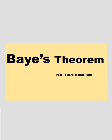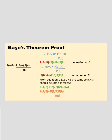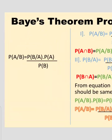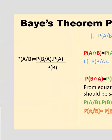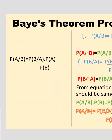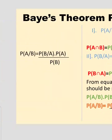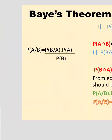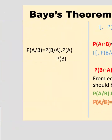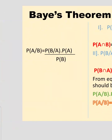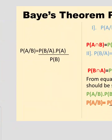Today we have to discuss Bayes' theorem. The statement of Bayes' theorem is: given two events, event A and event B, the probability of event A given that event B is present — denoted as P(A|B) — is equal to P(B|A) multiplied by P(A), divided by P(B). This is the statement of Bayes' theorem.